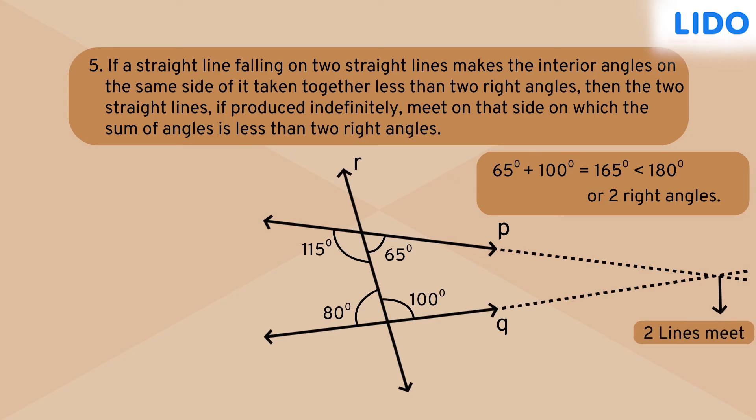What if we extend the lines on the opposite side, that is towards the left? As you can see, the lines are diverging. The distance between them is increasing and the lines will definitely not meet on this side. This is all that we can infer from Euclid's fifth postulate.